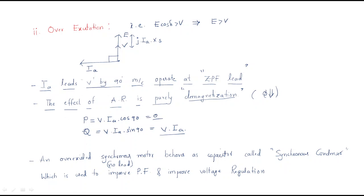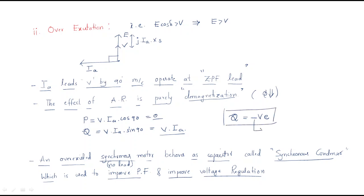By these two conditions we can conclude that an over-excited synchronous motor behaves as a capacitor, called a synchronous condenser. A synchronous condenser is used to improve power factor and improve voltage regulation. The reactive power Q is negative, meaning it loses — or supplies — reactive power to other machines.